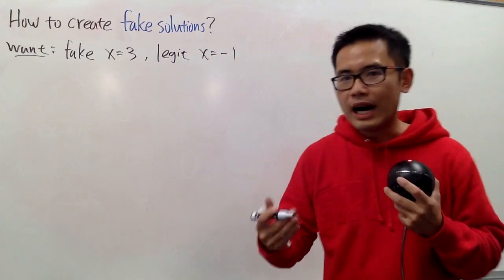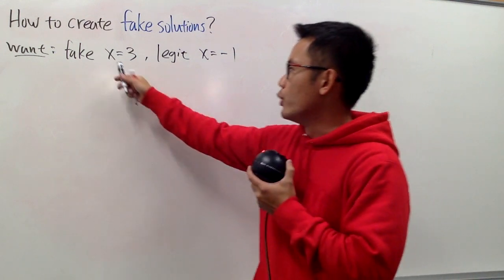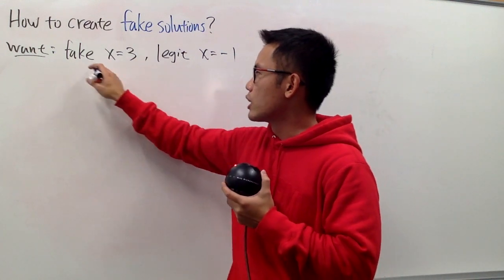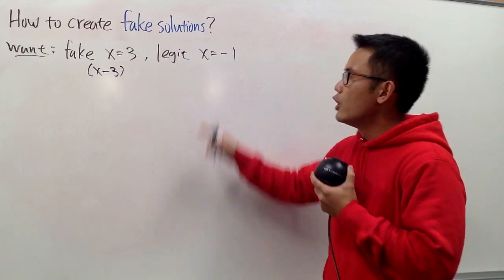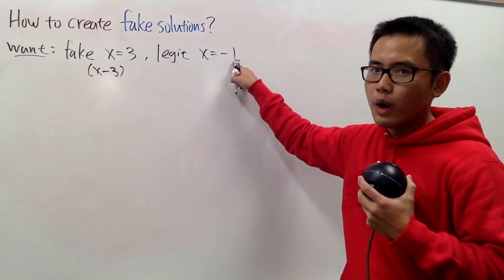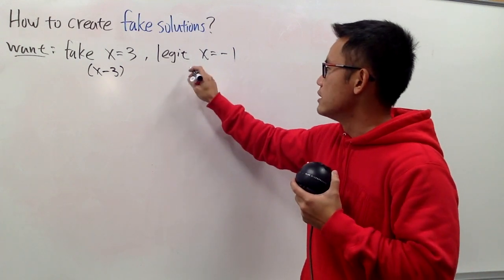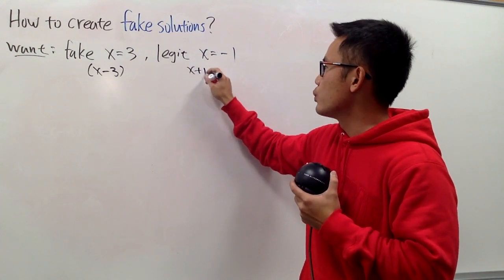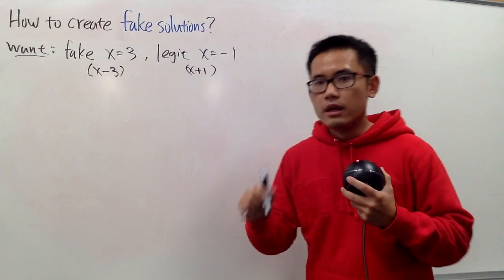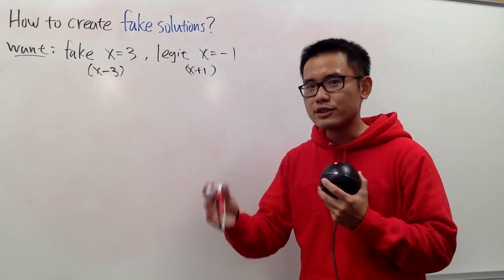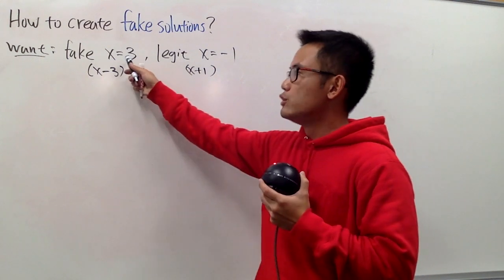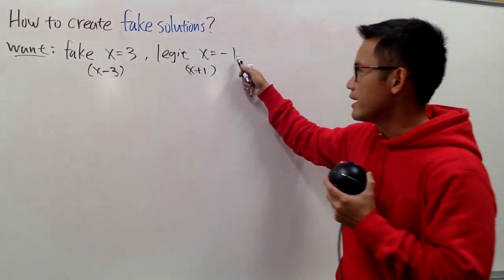And now, this is how you will do it. When you have x equals 3, we can talk about the factor x minus 3, which is subtraction on both sides. And likewise, when you have x equals negative 1, we will add 1 on both sides. So let me just put down x plus 1. Now, this is how we are going to create our rational equation so that 3 is a fake answer, but negative 1 is actually legit.